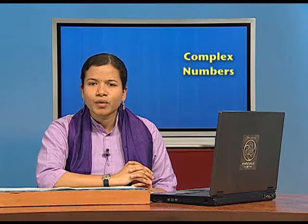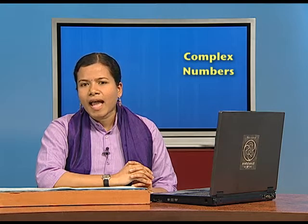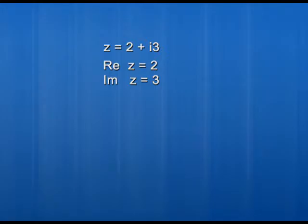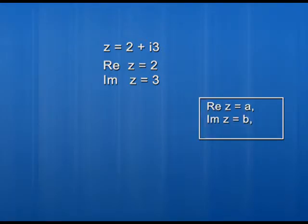Now consider the reverse: if we already know the real part and imaginary part of a complex number, can we find z? Yes — if Re(z) equals a and Im(z) equals b, then z equals a plus ib. Since a and b are real numbers, they can each be 0. So the possibilities are: Re(z) equals 0, or Im(z) equals 0, or both equal 0.